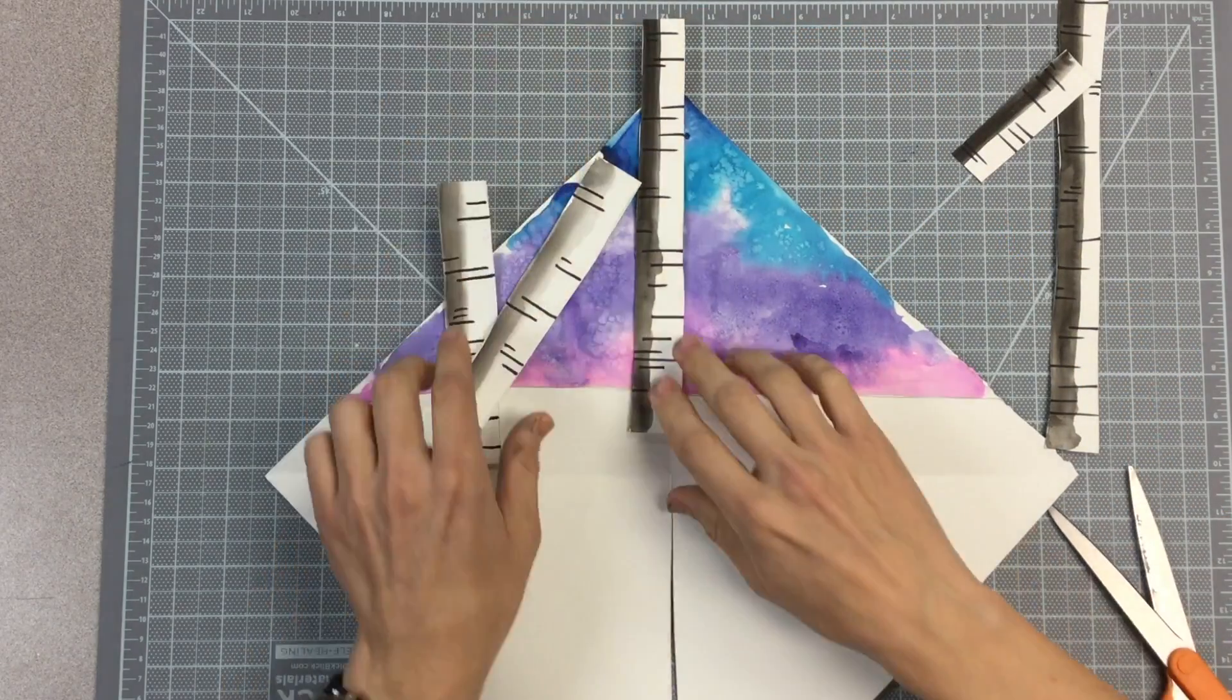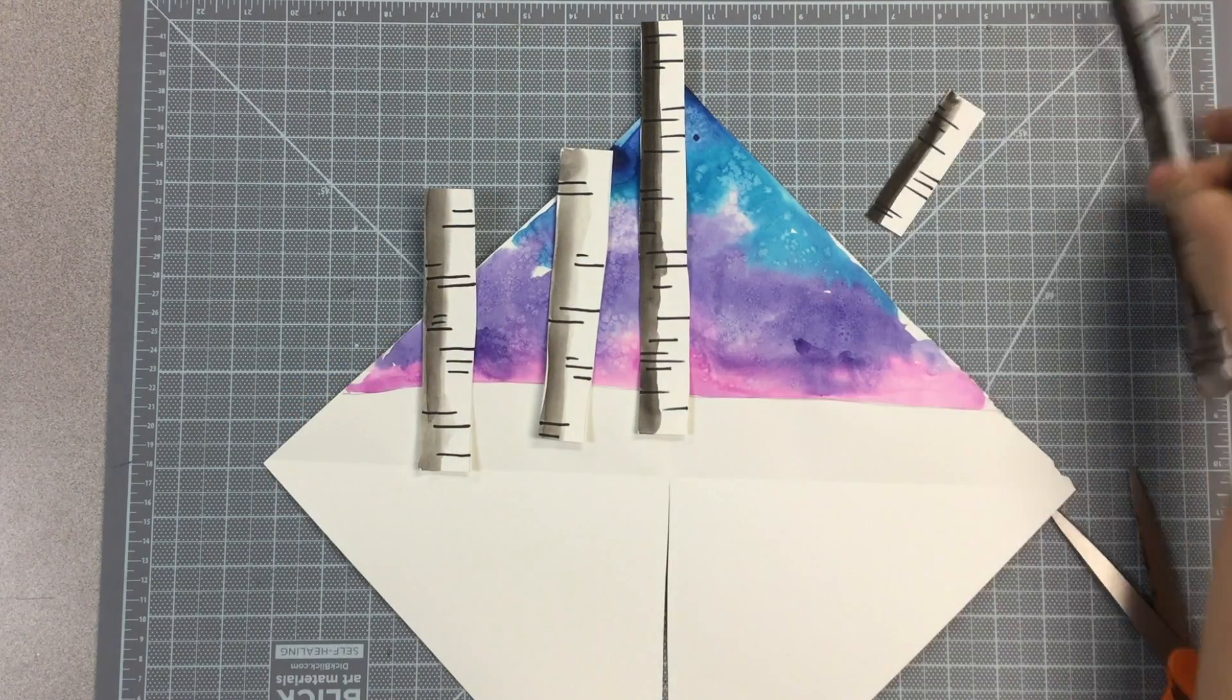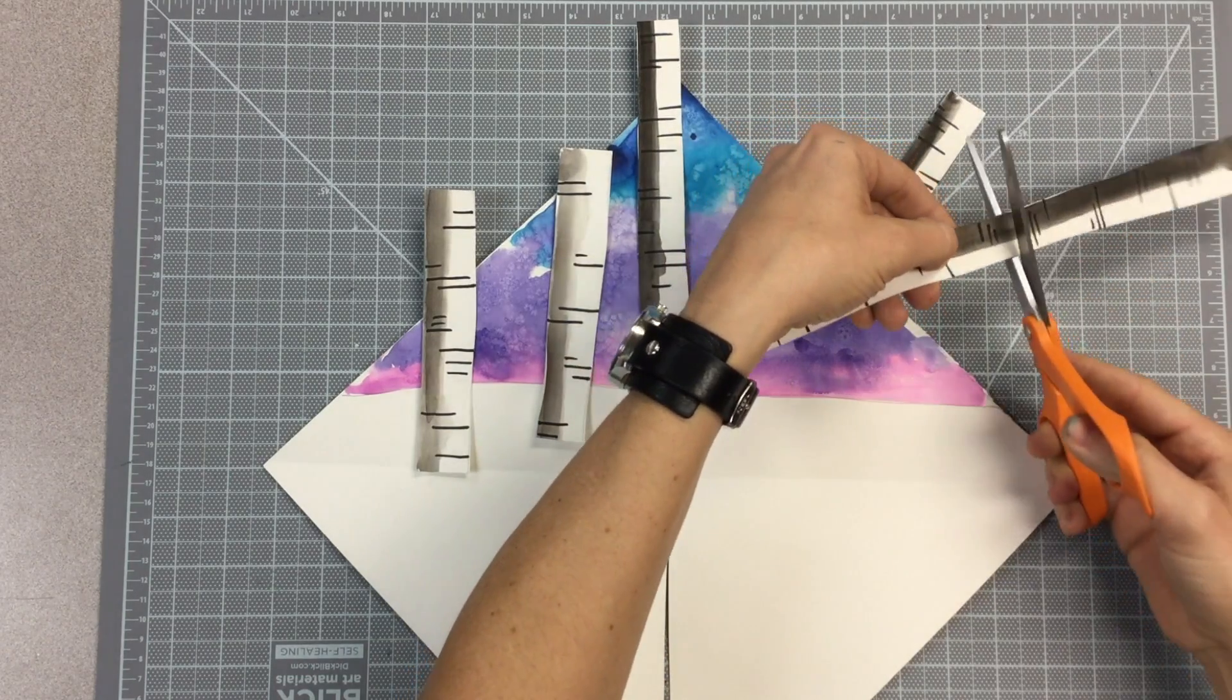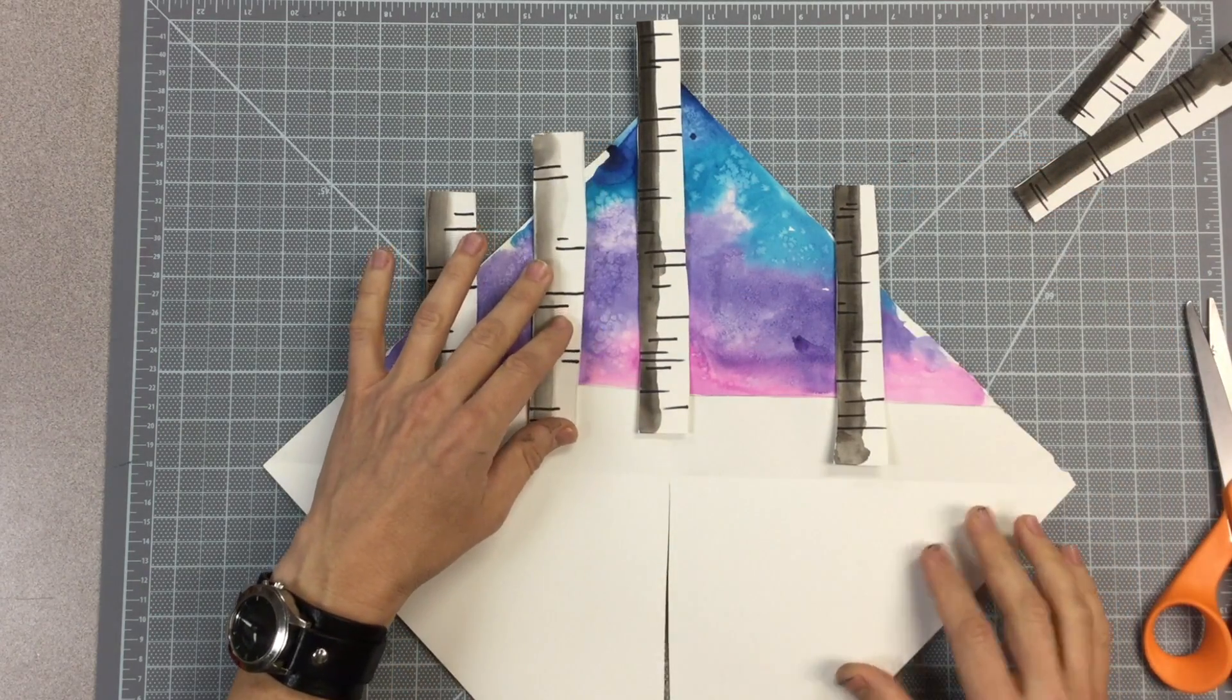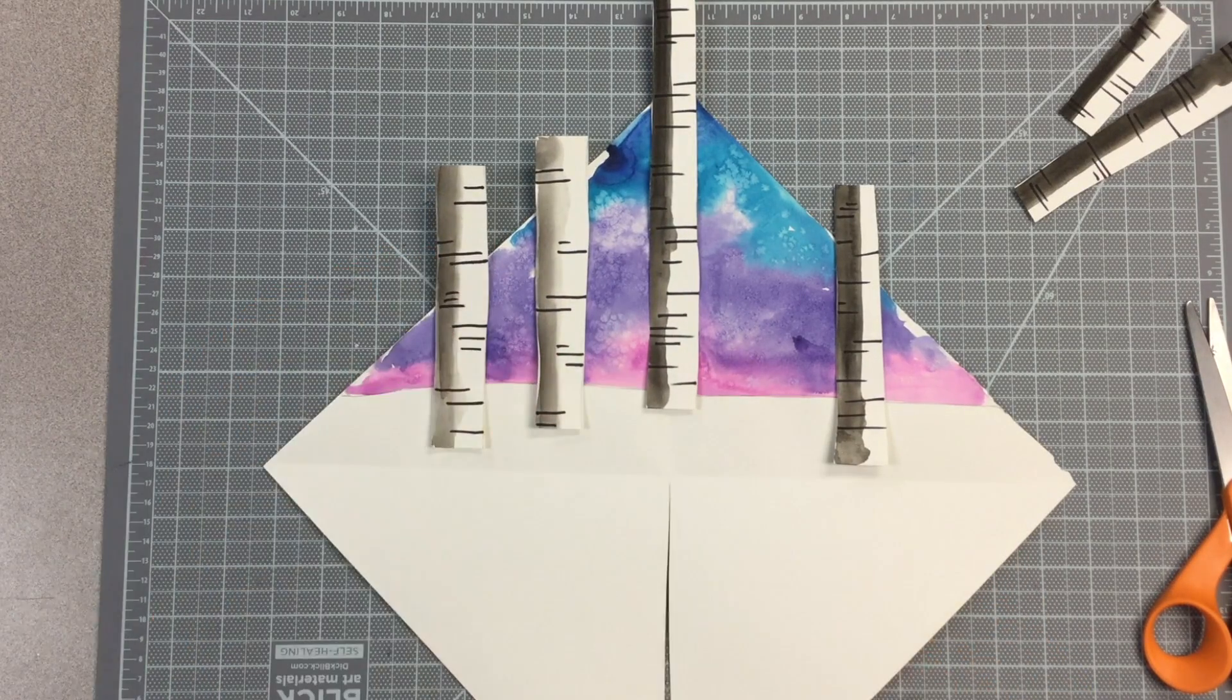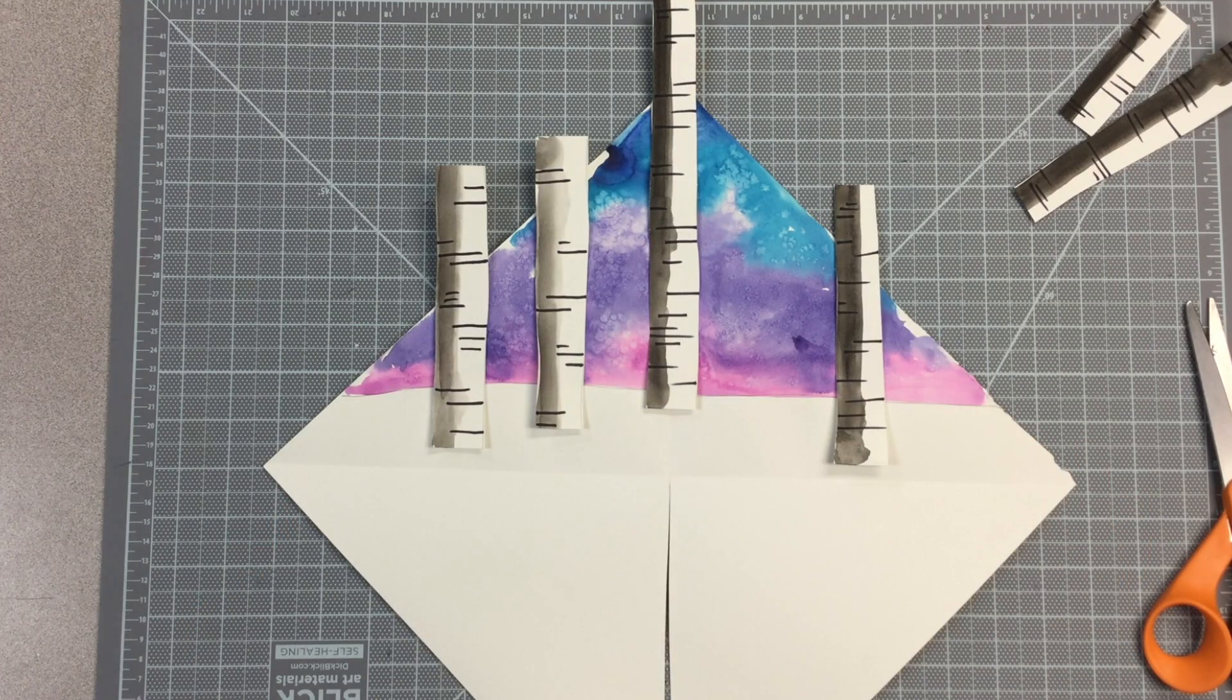And maybe we need one more somewhere over here. I don't want them evenly spaced out because in nature things are rarely evenly spaced out. So we'll just have them scattered around the picture a little bit. I think I'll go like this.